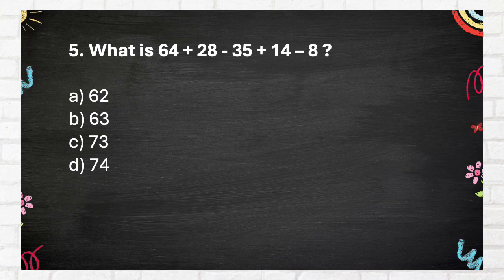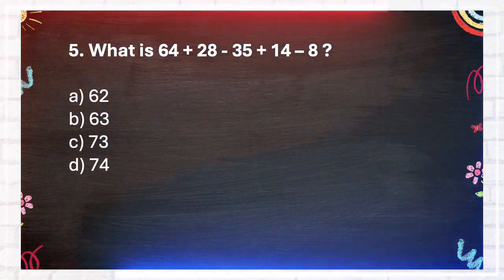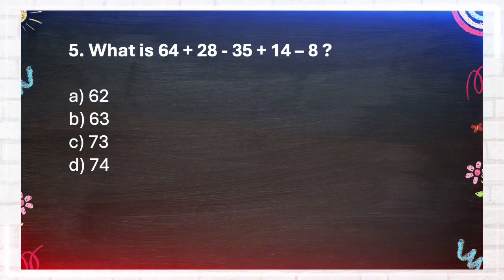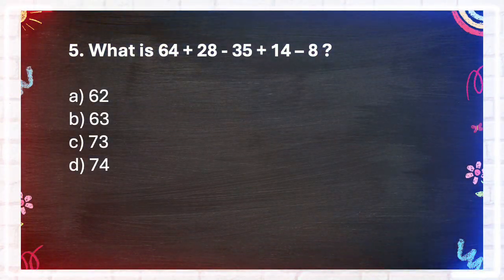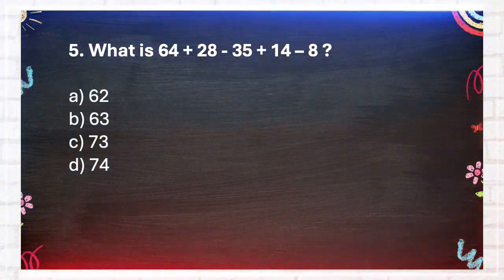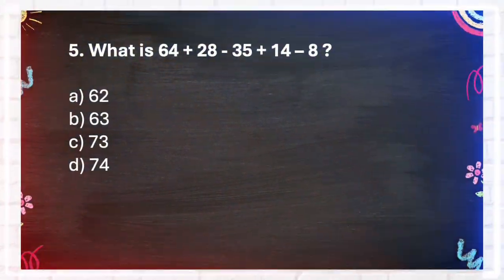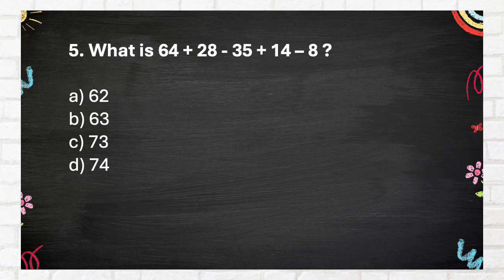Question number 5. What is 64 plus 28 minus 35 plus 14 minus 8? Again, what is 64 plus 28 minus 35 plus 14 minus 8? A. 62. B. 63. C. 73. D. 74. The answer is B. 63.